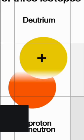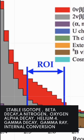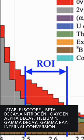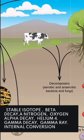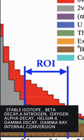Nuclear decay topics include the valley of stability, stable isotopes, beta decay, nitrogen, oxygen, alpha decay producing helium-4, gamma decay via gamma rays, and internal conversion.